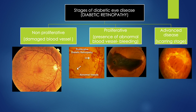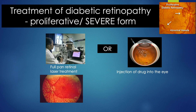The non-proliferative stage occurs in the early form of the disease — there will be an absence of abnormal vessels. Whereas the proliferative stage is when there are florid abnormal vessels in the eye. These abnormal vessels can either cause bleeding or scarring, which are bad for the vision.